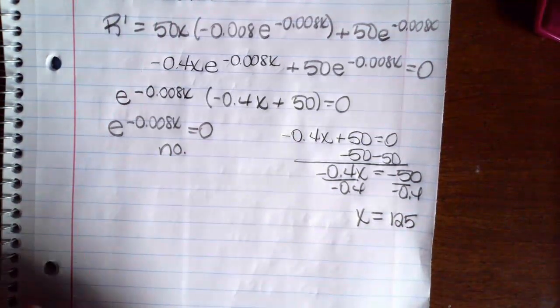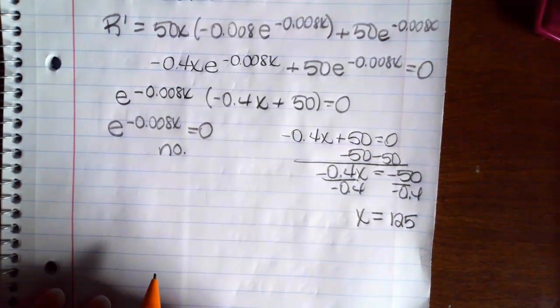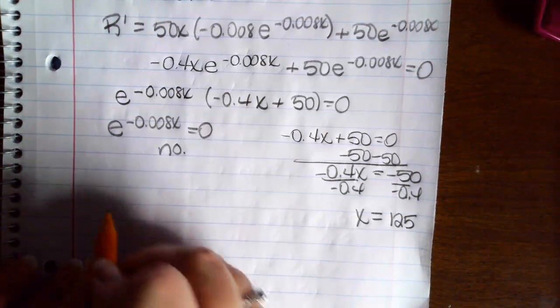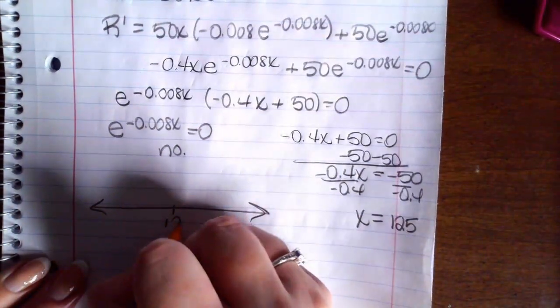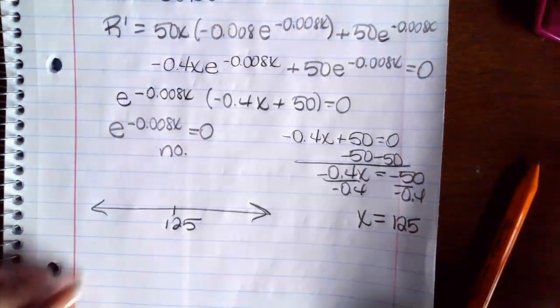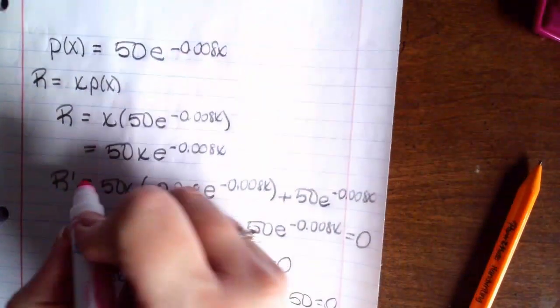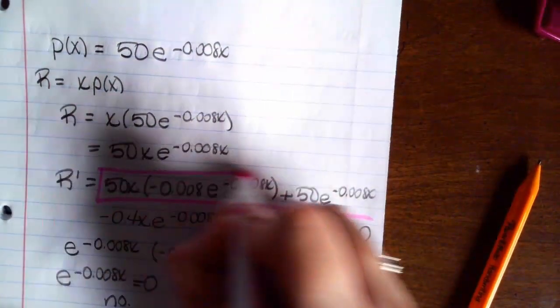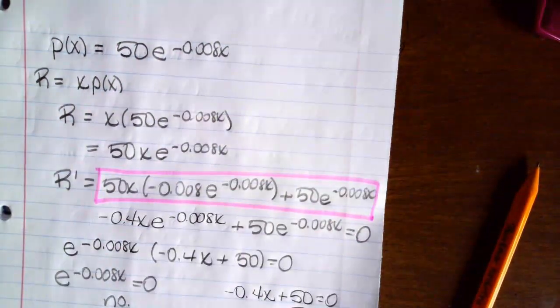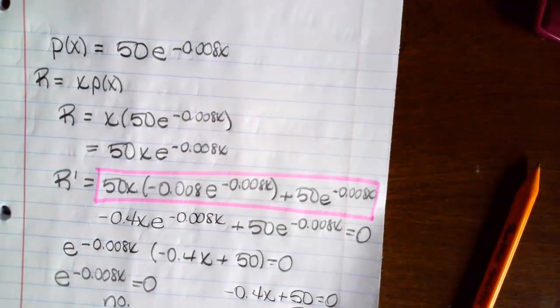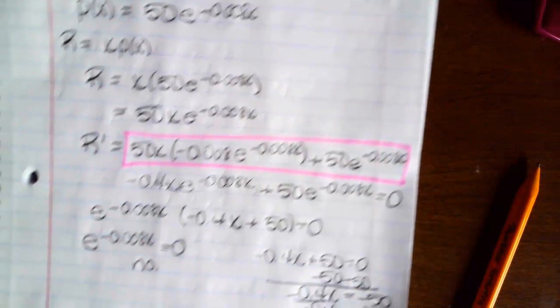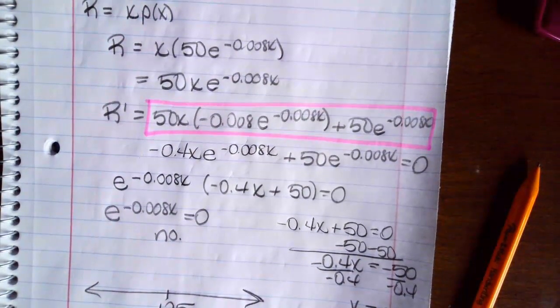Okay, so we want to find where we're maximizing revenue. So you've got one critical number at 125 and you want to put your test points into the first derivative to determine if that's increasing or decreasing. Okay, and that is it for Module 7.